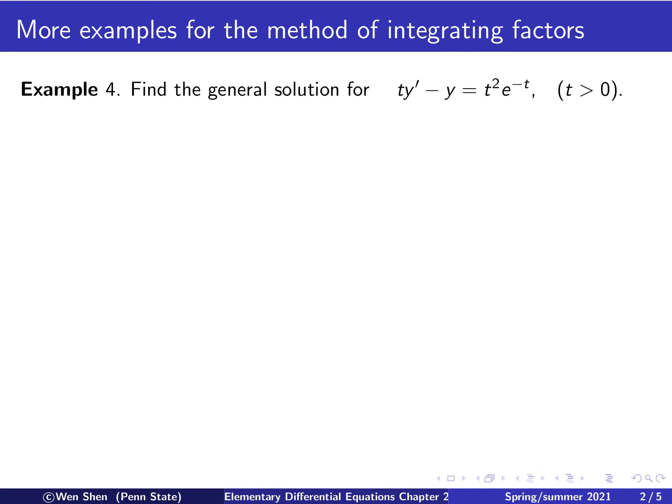In this example, we have the equation t times y prime minus y equals t squared e to the negative t. Our job is to find the general solution. The equation comes with the restriction that t is bigger than 0, and the reason for this will become clear very soon.